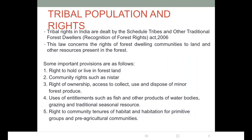The right of ownership is also recognized. They have access to collect, use, and dispose of minor forest produce. Minor forest produce includes all non-timber forest produce such as honey, tendu leaves, and medicinal herbs. They can collect it for their use.